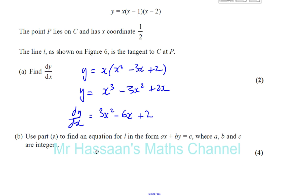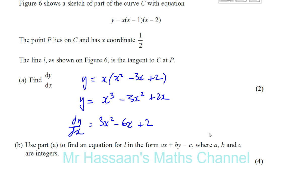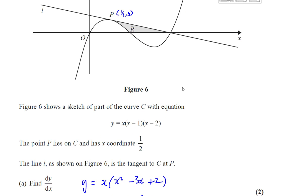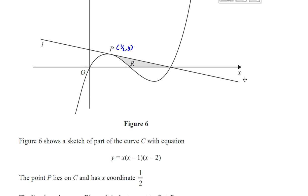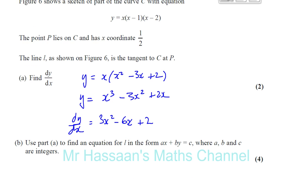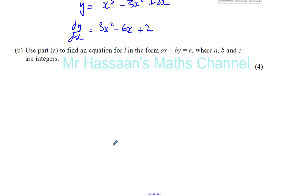Now part B says use part A to find an equation for the line L in the form Ax plus By equals C, where A, B, and C are integers. L is a straight line. To find the equation of a straight line, we need to know two things: the gradient of the line, and any point on the line.